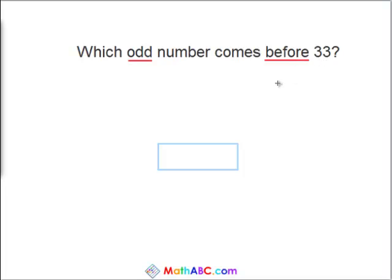Okay, now 33 itself is an odd number, right? So odd numbers cannot be divisible by 2, but even numbers are divisible by 2.